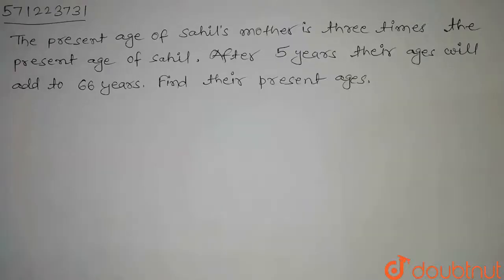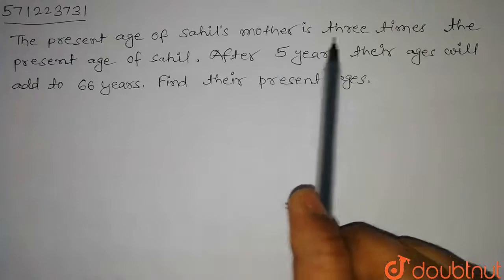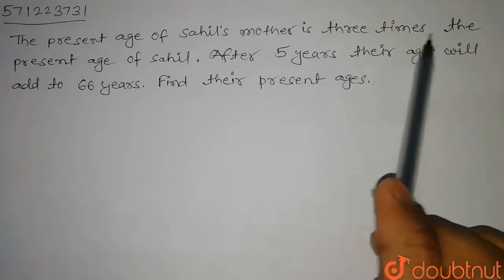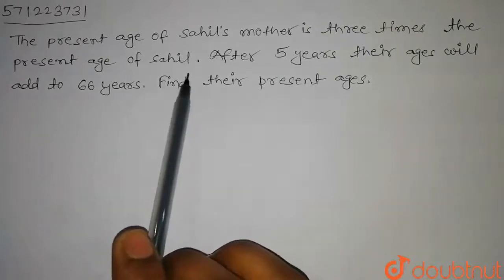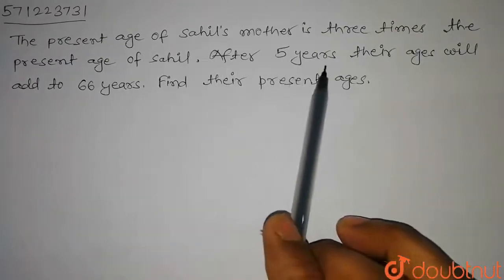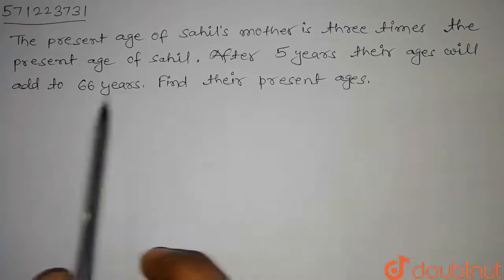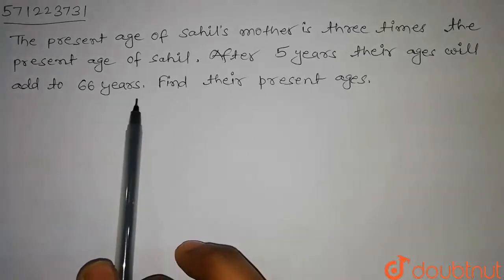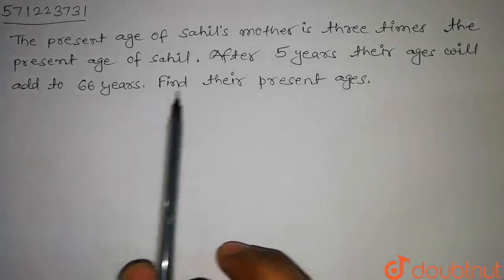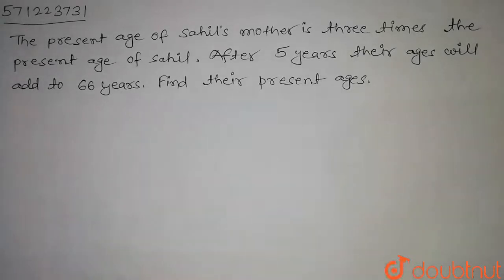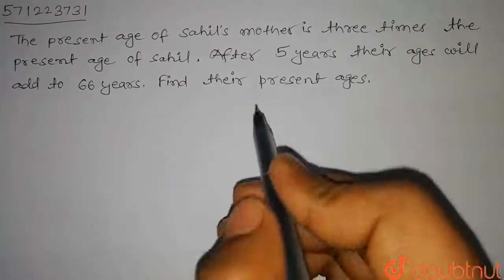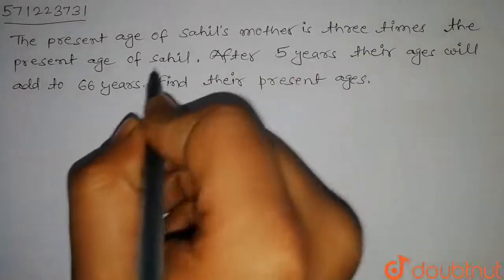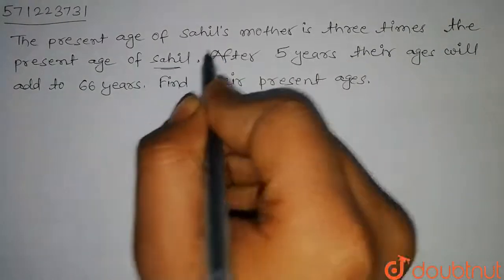Hello students, the question is: the present age of Sahil's mother is 3 times the present age of Sahil. After 5 years, their ages will add to 66 years. Find their present ages. In this question we have to find the present ages of Sahil and Sahil's mother.